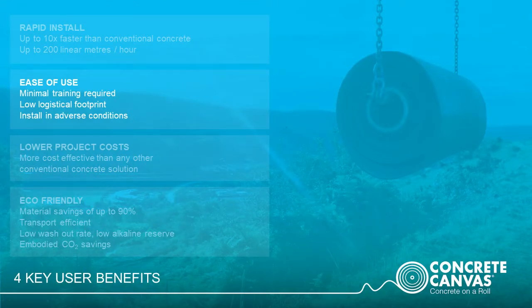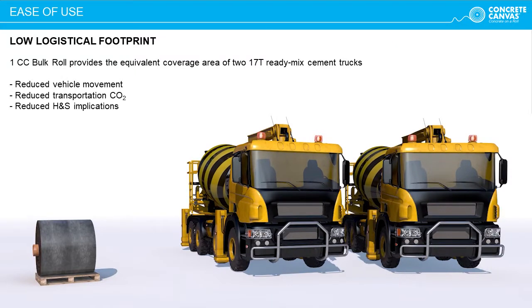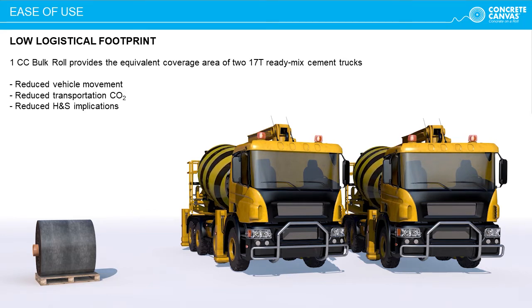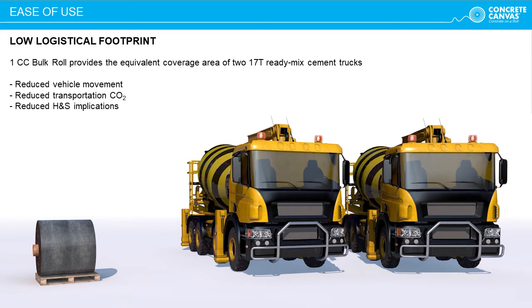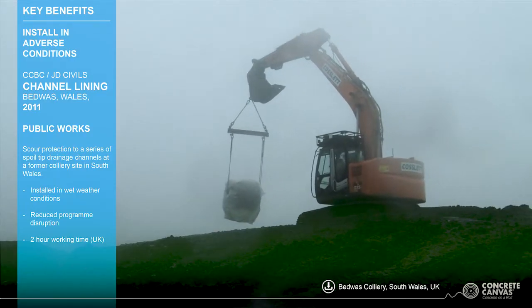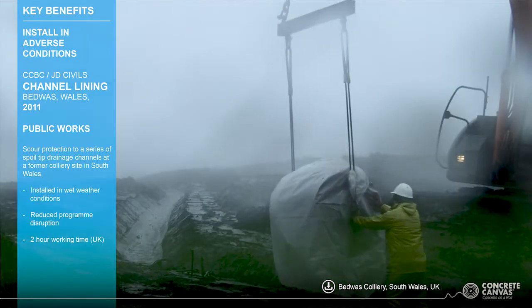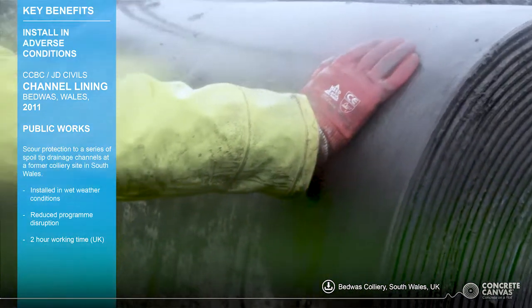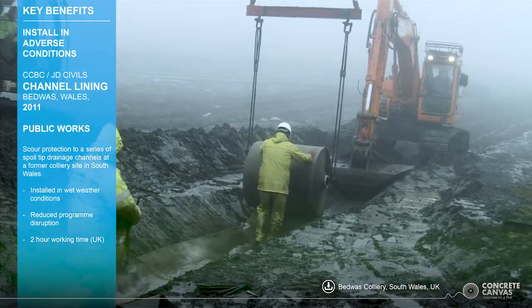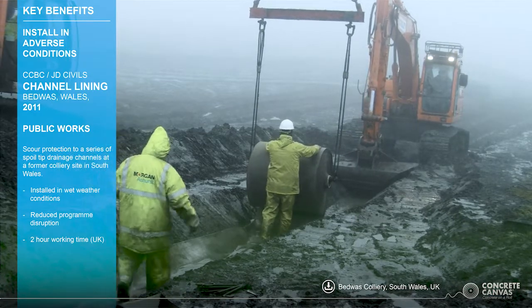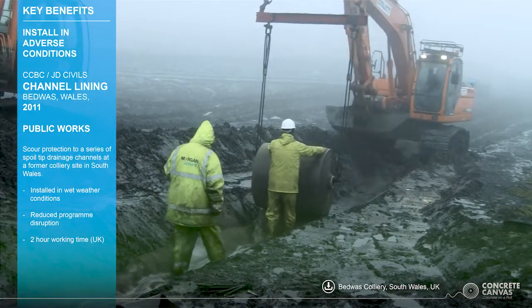The second key benefit to Concrete Canvas is its ease of use. There is minimum training required, allowing organisations to use their own framework contractors. Concrete Canvas are happy to provide toolbox talks to contractors on site on the first day of installation. A 200 square meter CC bulk roll provides an equivalent coverage area of two 17-tonne ready-mix trucks, greatly reducing vehicle movements on larger projects, further reducing embodied CO2 and minimizing health and safety risk. CC can also be installed in very wet conditions, which greatly reduces programme disruption due to inclement weather. CC has a working time of one to two hours depending on ambient temperature.